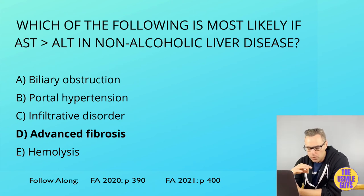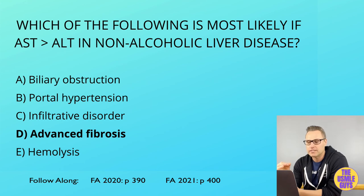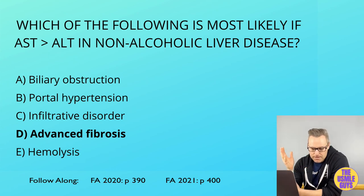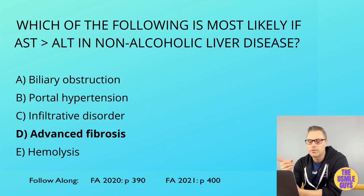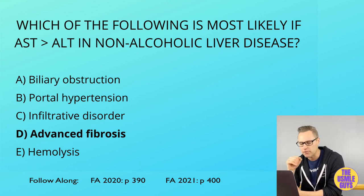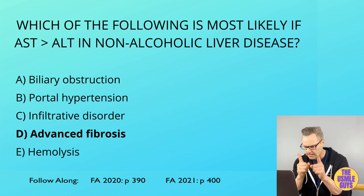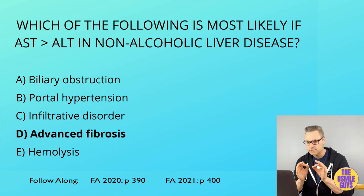Most liver diseases will demonstrate an ALT that is greater than AST. However, in alcoholic liver disease, AST is greater than ALT — it kind of reverses. If your patient is not a drinker but AST is still greater than ALT, this is likely the result of either an advanced stage of fibrosis or cirrhosis. If you get a massively elevated aminotransferase level — say over 1,000 — consider drug-induced liver injury, ischemic hepatitis, acute viral hepatitis, or autoimmune hepatitis.